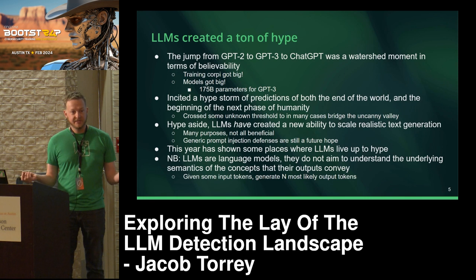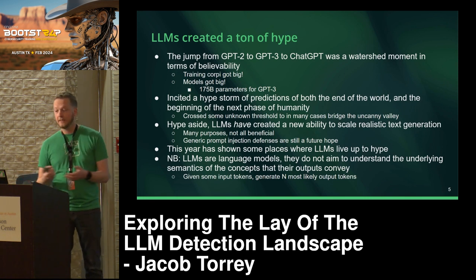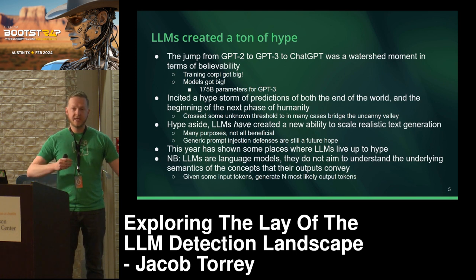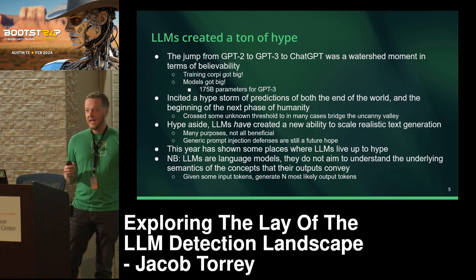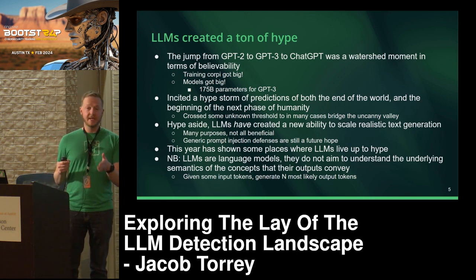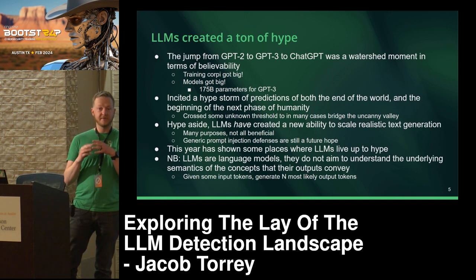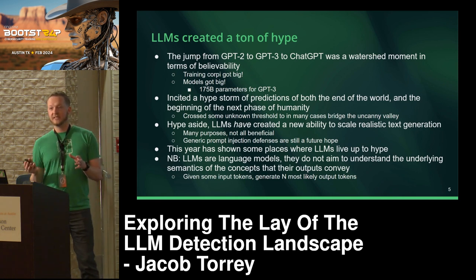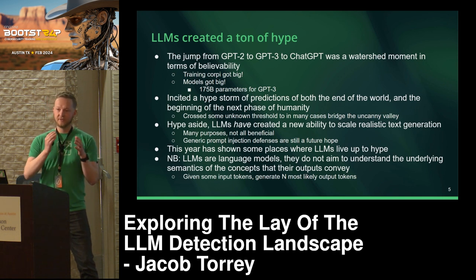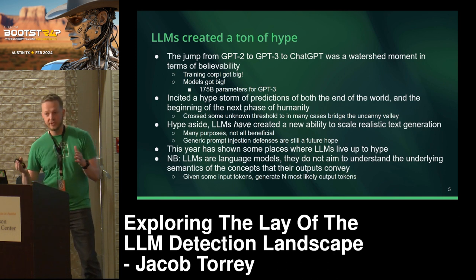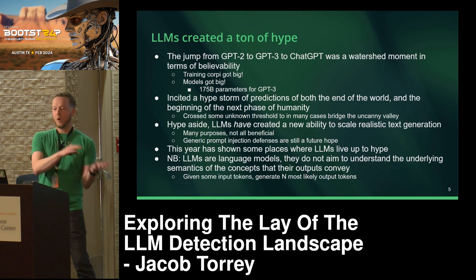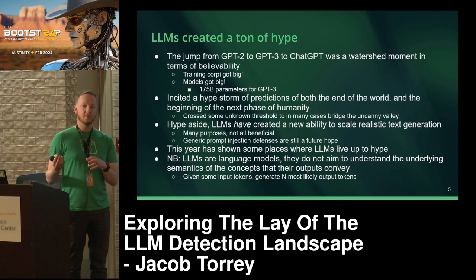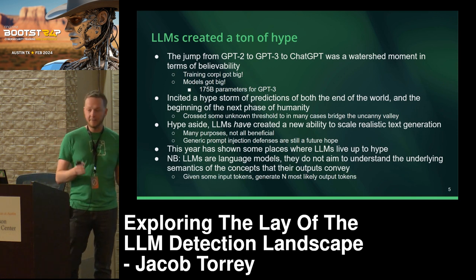There was a big jump between GPT-2, which could generate text but wasn't very believable, and GPT-3, where people in the field started paying attention. Then ChatGPT was the fastest online service to go from launch to 100 million users. That was a watershed moment where it got believable and became usable by average people, not just AI practitioners.